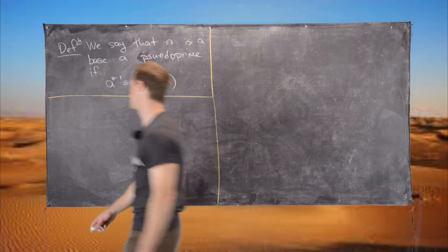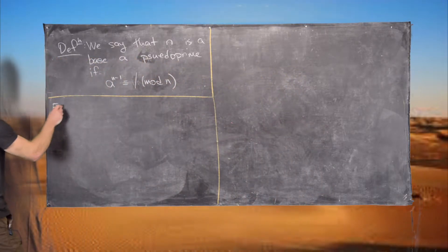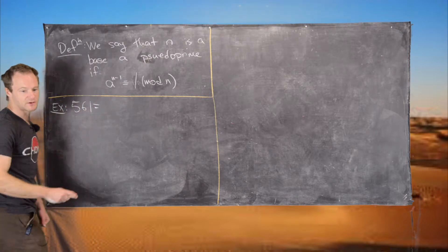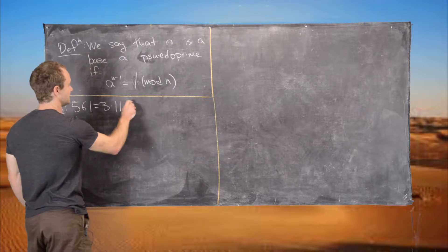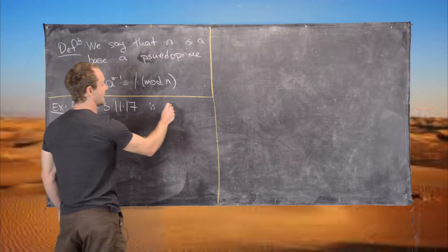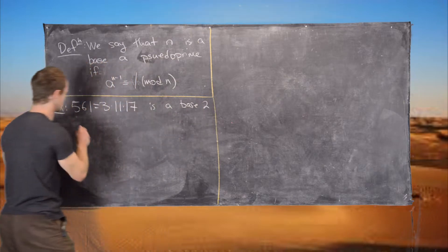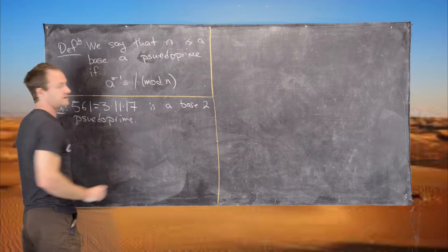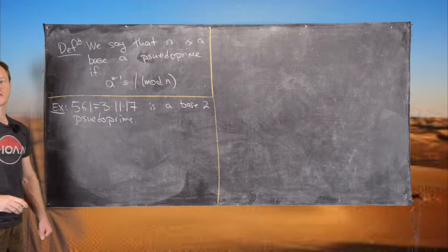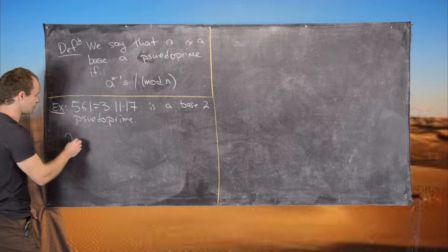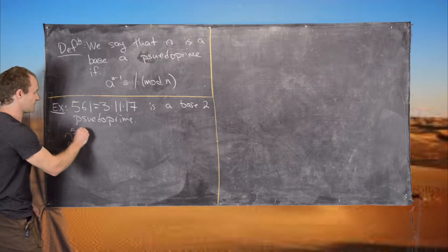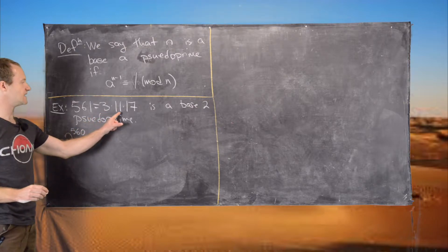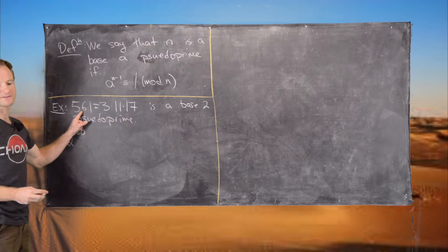Let's look at an example. 561, which equals 3 times 11 times 17, is a base-2 pseudoprime. Let's check that. We need to look at 2 to the power 560, and what we'll do is look at this mod all of the individual components of 561.